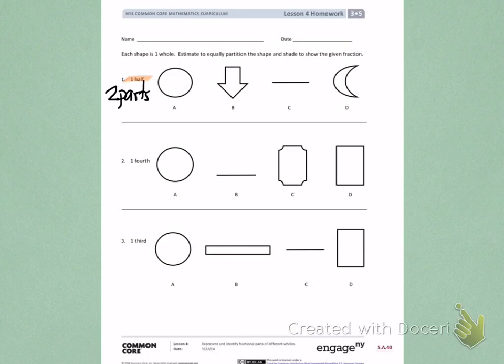On letter A, I will partition to show equal parts. That doesn't look quite equal, so let's try again. Then I need to shade one half.